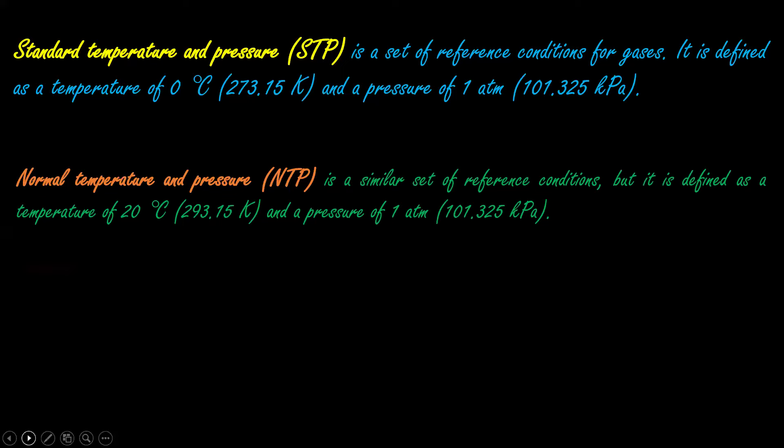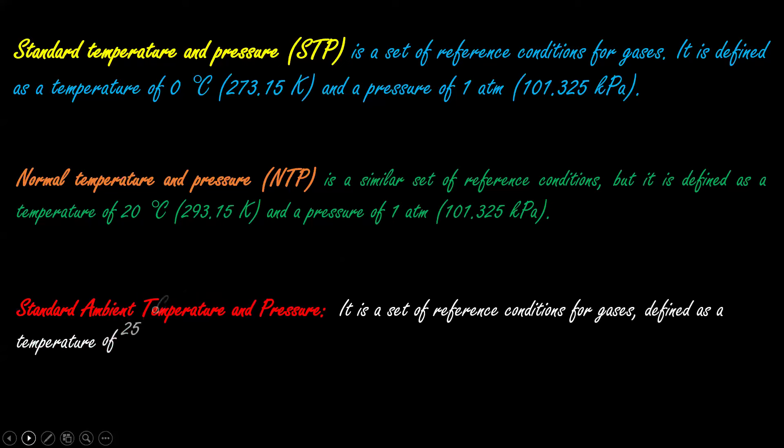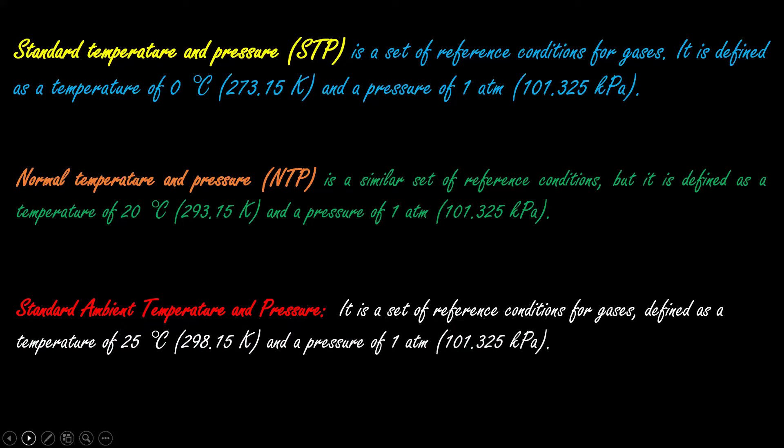The last one is standard ambient temperature and pressure, or SATP. In most cases when we solve questions regarding atmospheric chemistry, we use standard ambient temperature and pressure. It is also a reference condition defined as when temperature is 25 degrees Celsius and pressure is 1 atmospheric pressure. Such a condition is termed as standard ambient temperature and pressure.